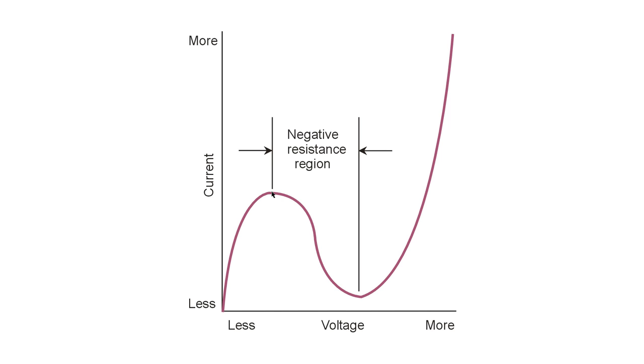However, when you have a component that has a negative resistance zone, like the one shown here, within a certain range of voltages, the current actually decreases as the voltage increases.